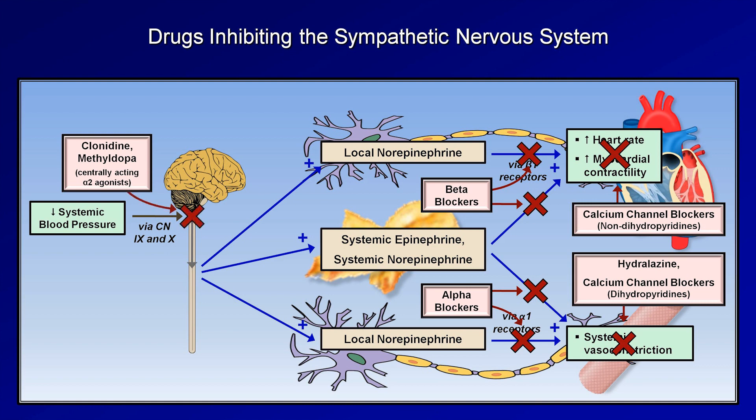Although it would seem that clonidine and methyldopa would be the best drugs as they act very proximally and can inhibit both cardiac and vascular end effects of sympathetic stimulation, unfortunately they have not been nearly as helpful as the other classes. Methyldopa is used almost solely in pregnancy, when many other drugs are held due to concern for risk to the fetus. Clonidine is reserved as a third or even fourth-line medication, to be used only when all else fails.